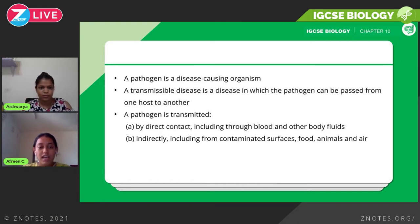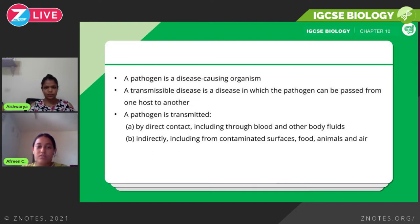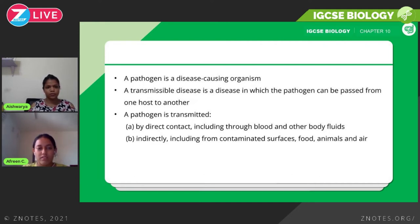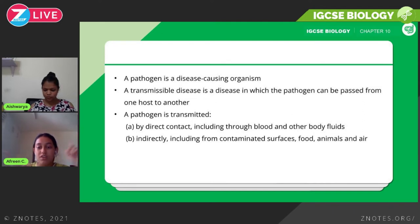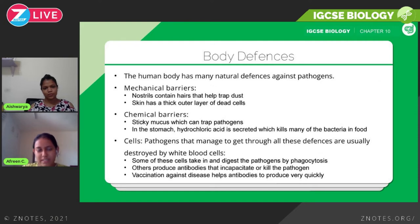The second method is indirect contact — this could be from a contaminated surface, which is why it's so important to wash your hands and sanitize surfaces regularly. Contaminated sources can also include food, animals, and air, which is why we wear masks. If you are infected yourself, be careful not to touch surfaces to protect others.